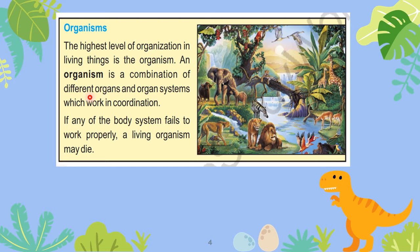In one organism, there can be multiple organ systems. For example, there is the circulatory system, excretory system, respiratory system, and digestive system. All these organ systems together make up an organism.